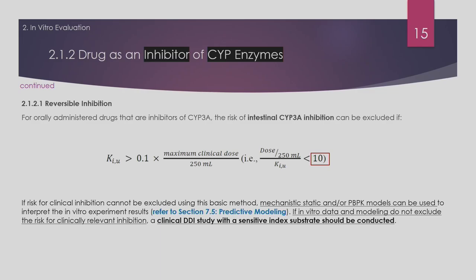Section 7.5 covers predictive modeling. Based on these concepts, if DDI is expected, a PPK model or mechanistic static model can be applied. If DDI is predicted, a clinical study is required. For time-dependent inhibition, the concept is similar but uses different formulas that account for the rate of enzyme inactivation. The exposure concentration multiplied by a safety factor of 5 is used. If the ratio is higher than 1.25, the next level of mechanistic or PK modeling needs to be considered.